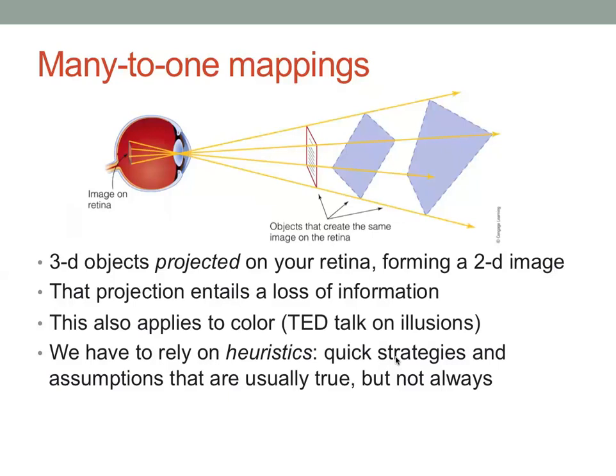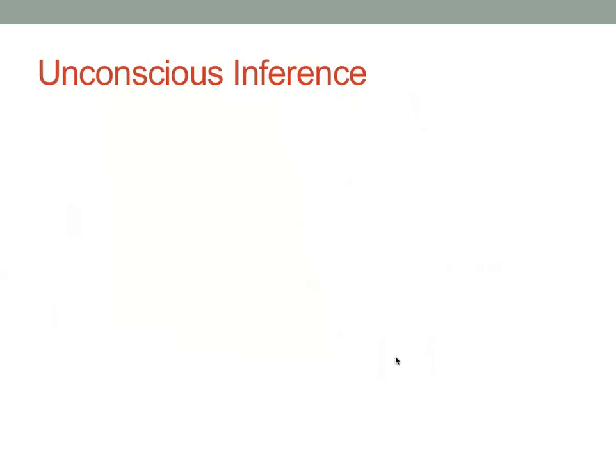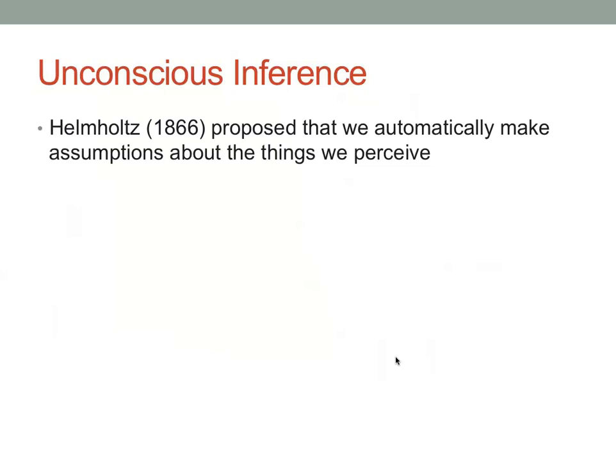One theory about how we draw these conclusions is called unconscious inference. Helmholtz — a very old figure who was doing psychology before there really was such a thing — proposed that we automatically make assumptions about the things we perceive. One of these is called the lighting-from-above hypothesis: we usually assume that light in a situation is coming from above. That's a good assumption — the sun is above us and we tend to have overhead lighting. It's uncommon for light to come from below, which is why it looks so weird when someone holds a flashlight under their face at a campfire.